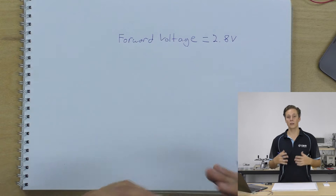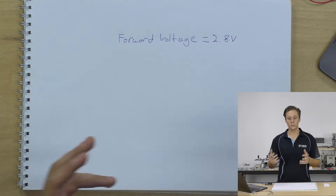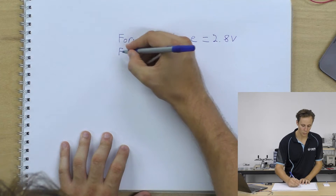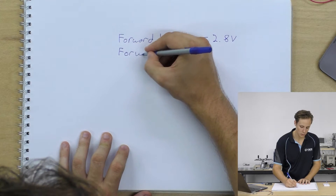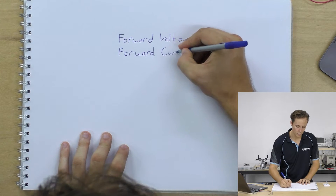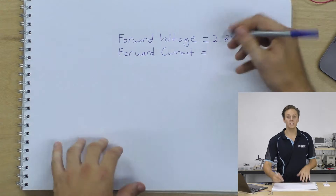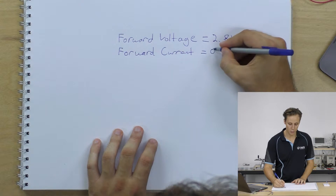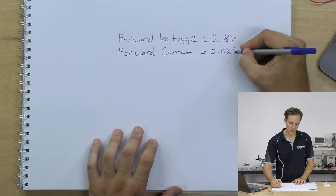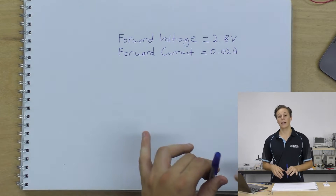You also have the forward current. The forward current for any LED is usually going to be between 18 and 20 milliamps, so let's assume it's 20 milliamps — a nice round number. Forward current is equal to 20 milliamps, which is also 0.02 of an amp. Those are the basic specifications of our LEDs.